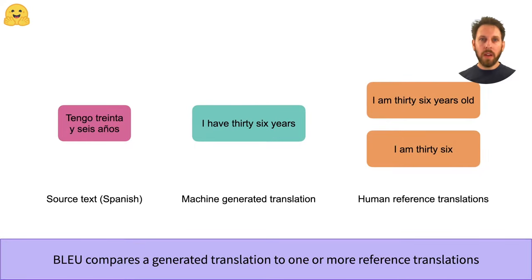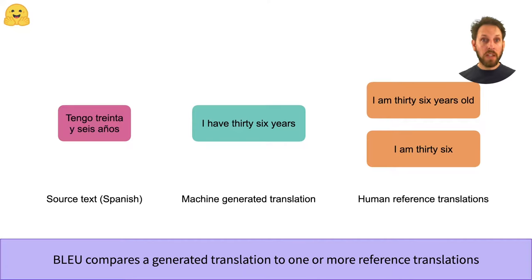The basic idea behind BLEU is to assign a single numerical score to a translation that tells us how good it is compared to one or more reference translations. In this example we have a word in Spanish that has been translated into English by some model. If we compare the generated translation to some reference human translations we can see that the model is actually pretty good but has made a common error — the Spanish word 'tengo' means 'have' in English, and this one-to-one translation is not quite natural.